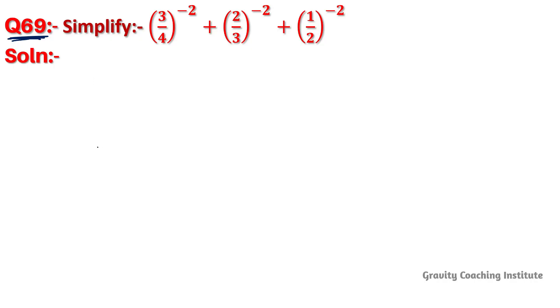Question number 69. Simplify 3 upon 4 whole to the power minus 2, plus 2 upon 3 whole to the power minus 2, plus 1 upon 2 whole to the power minus 2. Solution.